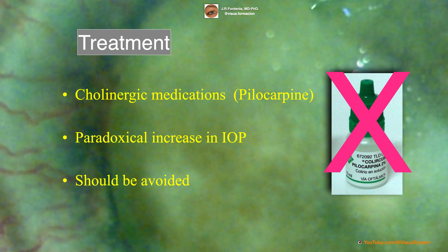In these cases, cholinergic medications such as pilocarpine should be avoided. Pilocarpine can be associated with a paradoxical increase in intraocular pressure because pilocarpine causes the iridolenticular diaphragm to shift forward and further close the angle.